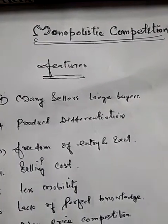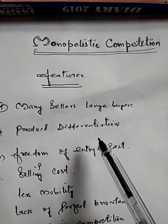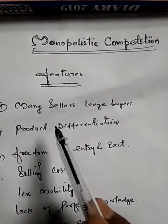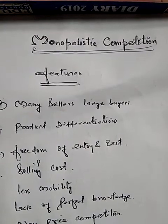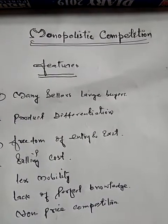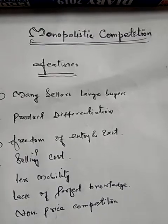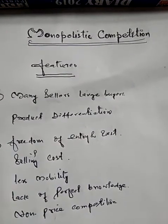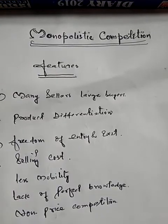The second feature is product differentiation. The products obtained from different firms under monopolistic competition are differentiated — this is the distinctive feature of monopolistic competition. Though the number of firms is large, their products differ from one another in color, shape, brand, quality, durability, and packing. These products are close substitutes of one another.